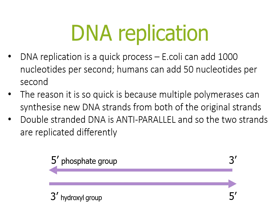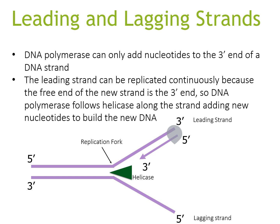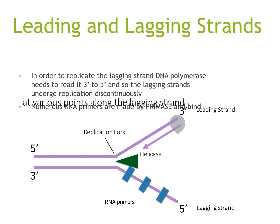Double-stranded DNA is anti-parallel, so the two strands are replicated differently — one strand runs 5' to 3' with a phosphate group, and the other runs 3' to 5' with a hydroxyl group. The leading strand can be replicated continuously because the free end of the new strand grows in the same direction as the replication fork. DNA polymerase follows helicase along the strand, adding new nucleotides to build new DNA.